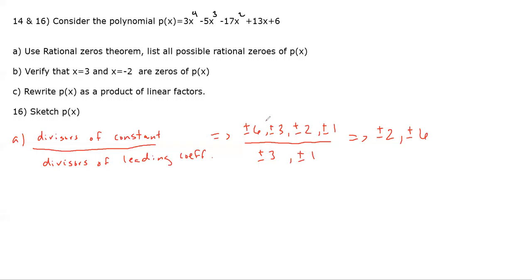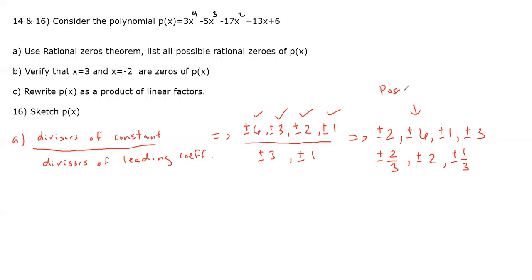Going through all combinations: ±6/±3 = ±2; ±6/±1 = ±6; ±3/±3 = ±1; ±3/±1 = ±3; ±2/3; ±2/1 = ±2; ±1/±3 = ±1/3; ±1/±1 = ±1. These are all possible rational zeros of P(x) according to the rational zeros theorem. The more divisors we have, the more possible zeros we have.